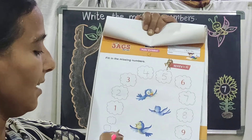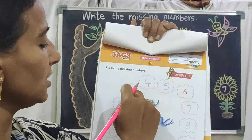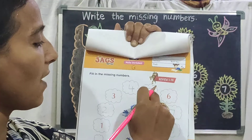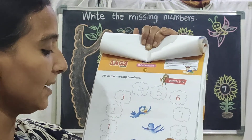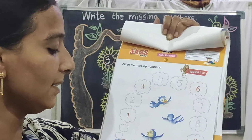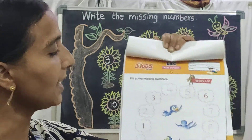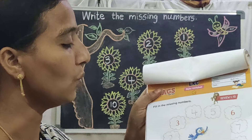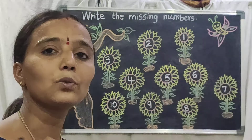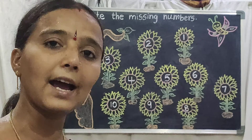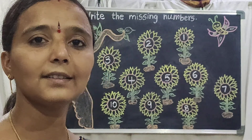See your children — let's count now: 1, 2, 3, 4, 5, 6, 7, 8, 9, 10. Like this we are completing this page. All of you practice 1 to 10 numbers many times. Thank you children.